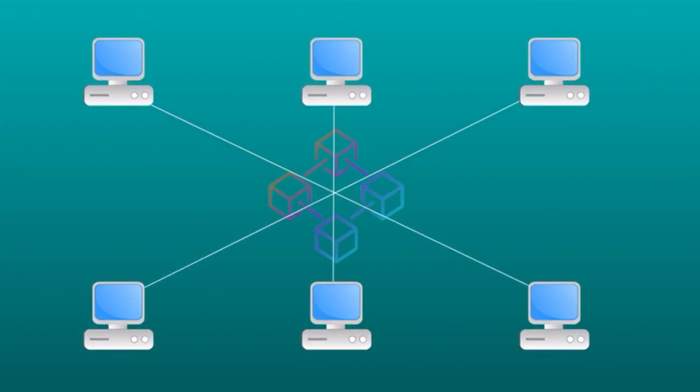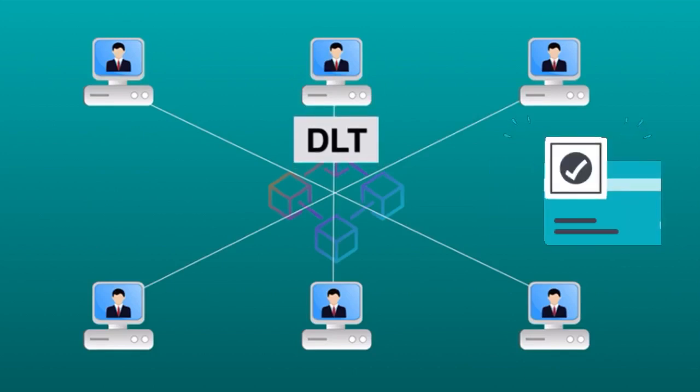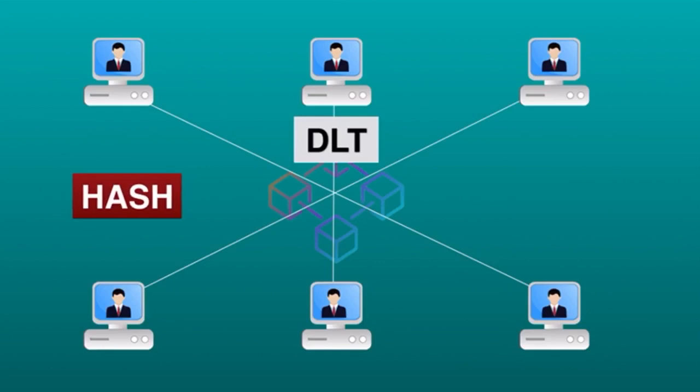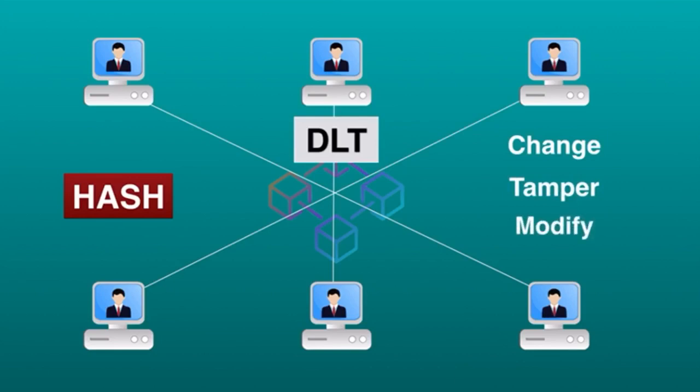Blockchain is based on a decentralized database that is managed by multiple participants, known as Distributed Ledger Technology or DLT. It records transactions with an unchangeable cryptographic signature called a hash algorithm that makes the data recorded on a blockchain unable to be changed, tampered, or modified. This mechanism makes blockchain a legitimate pioneer for industries such as payments, healthcare, cybersecurity, and cryptocurrency.